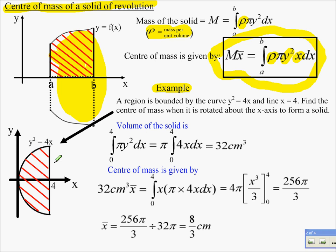I've got here a region bounded by the curve y squared is 4x and the line x equals 4. I rotate that about the x axis and I need to find the center of mass when that's rotated and is a solid.